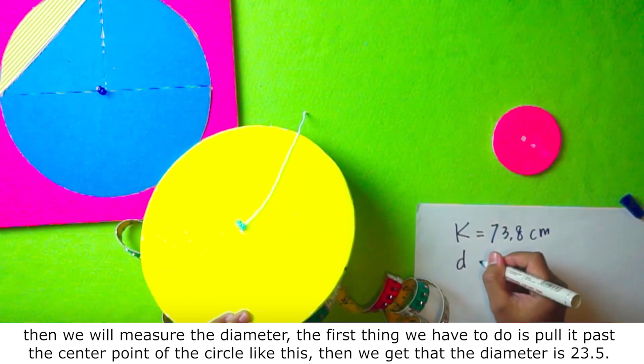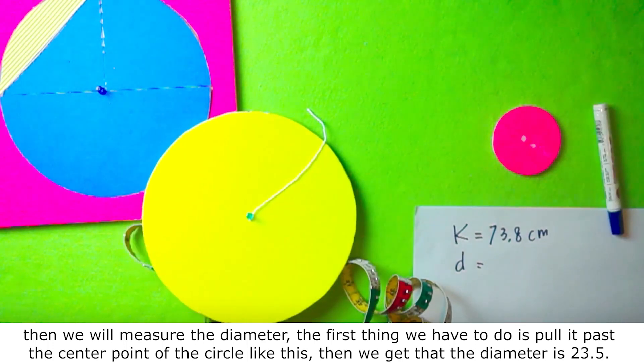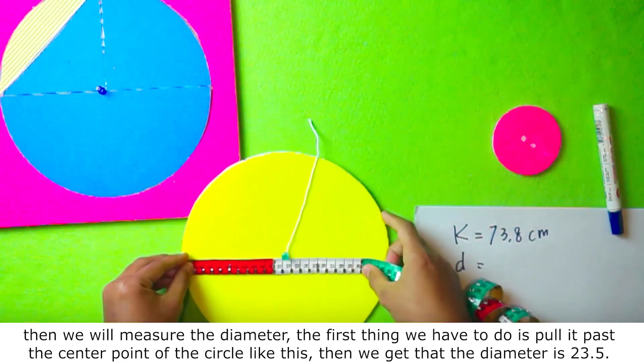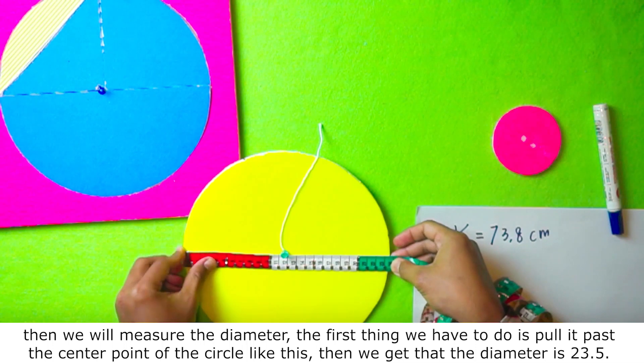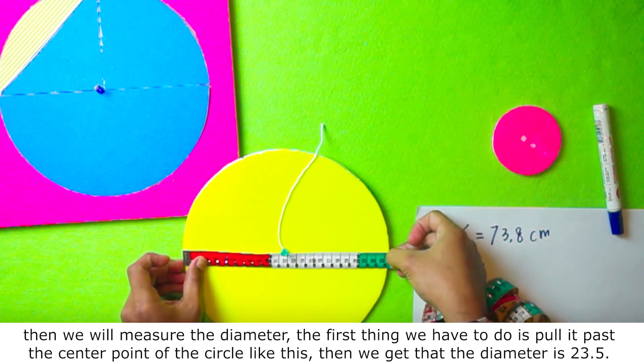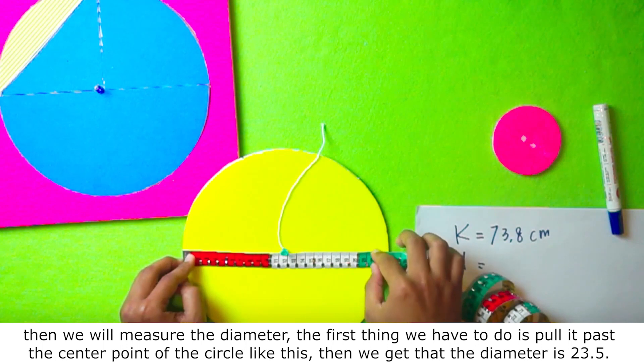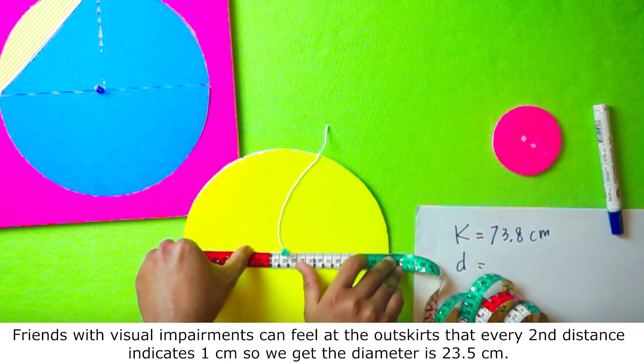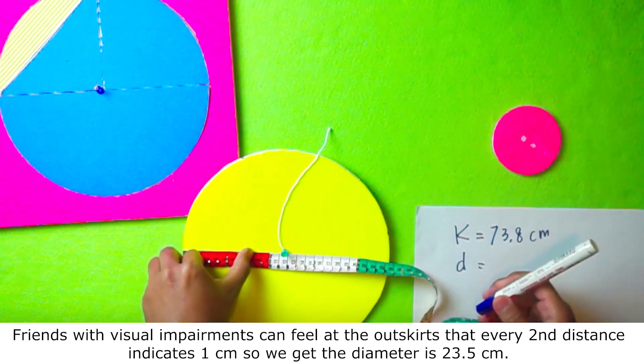Then, we will measure the diameter. The first thing we have to do is pull it past the center point of the circle. Then, we get that the diameter is 23.5. Friends with visual impairment can touch at the outskirt that every second distance indicates 1 cm. So, we get the diameter is 23.5 cm.